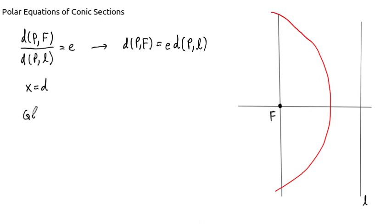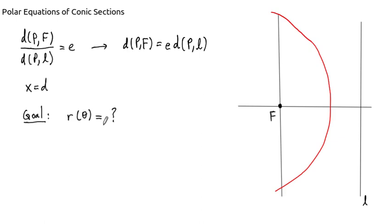Our goal is to get a polar function R equals R(θ) that tells us where every point on this conic section is in polar coordinates.